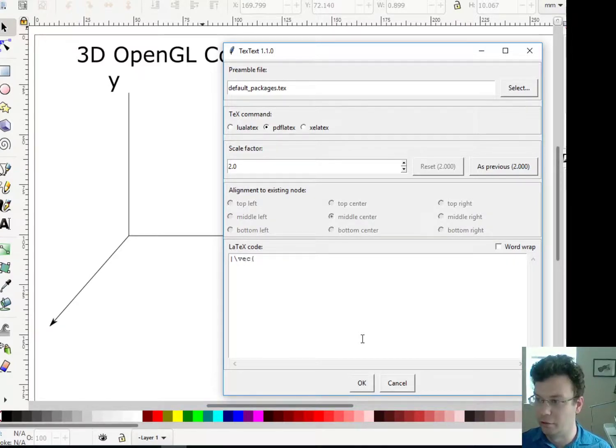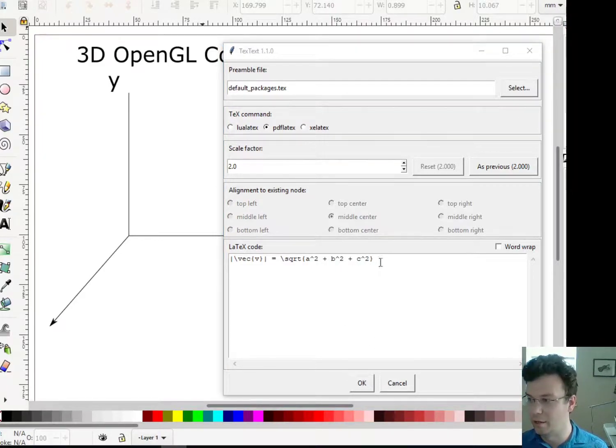the magnitude of the vector v is equal to the square root of A squared plus B squared. It's similar so far, but now we're going to put C squared. So it's a direct generalization of the Pythagorean theorem up to higher dimensions.